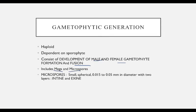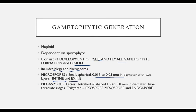Microspores are small and spherical, with a measurable diameter, and they contain two wall layers: the intine and exine. Megaspores are larger and tetrahedral in shape, larger than microspores. They have tri-radiate ridges and are tri-layered, consisting of three layers: the outer exospore, the middle mesospore, and the inner endospore.